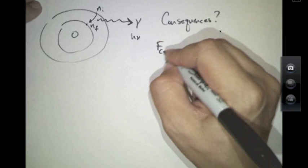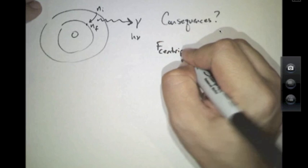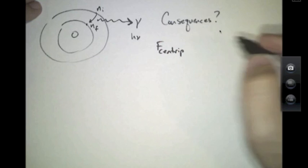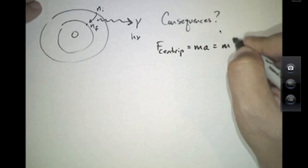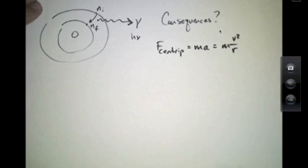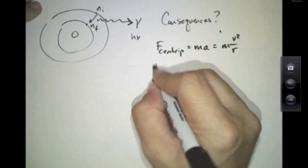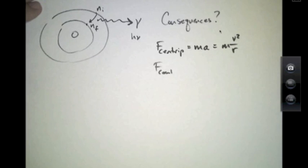He pointed out that this model has an electron experiencing a centripetal force, which we know from first-year physics is mass times acceleration, where acceleration is V squared over R.